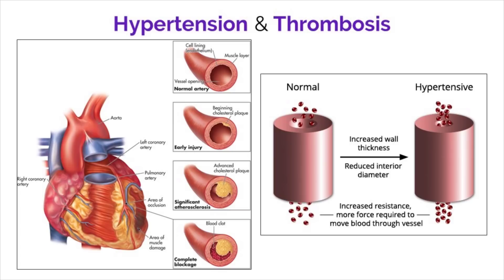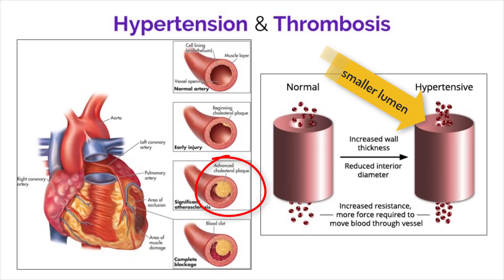Thrombosis is the formation of a clot within a blood vessel. This can occur from cholesterol deposits built up in the vessels, called atherosclerosis. If there are cholesterol buildups in the blood vessels, it reduces the size of the lumen, making it harder for blood to move through the system. This decrease in lumen diameter increases the pressure inside the arteries because it forces blood cells to move through a narrower space, creating hypertension.